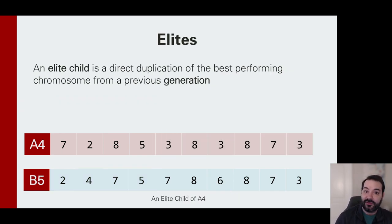One last thing you can do is build out elites. So an elite child is this idea that A4, maybe it was the best that we ever got to see. And we want to carry that on as the generations occur. So in that case, one of my children may be a direct copy of whatever that top performer was. These are just methods to help stabilize or control your algorithm so you get better results.